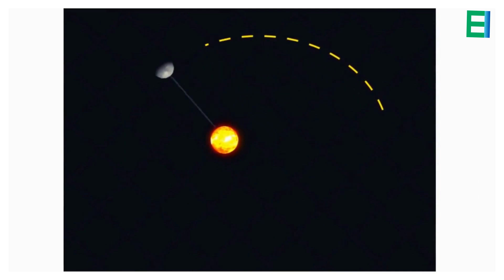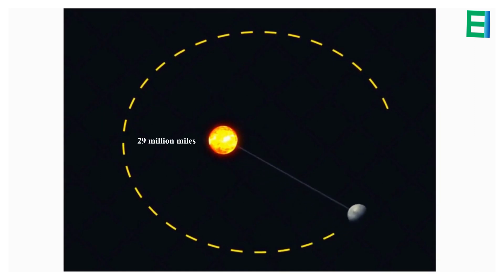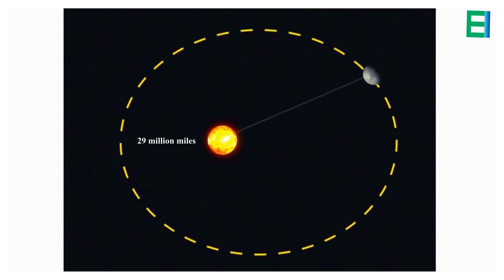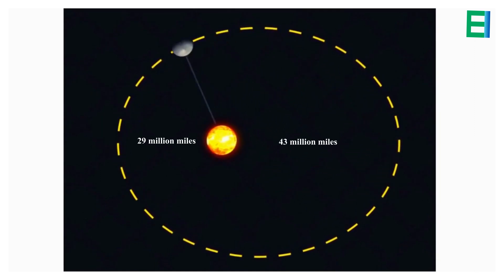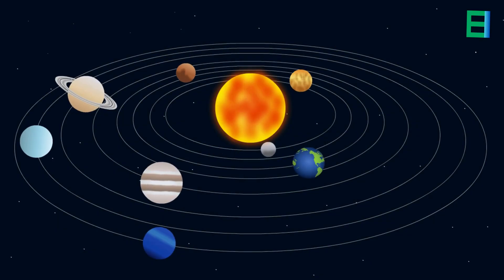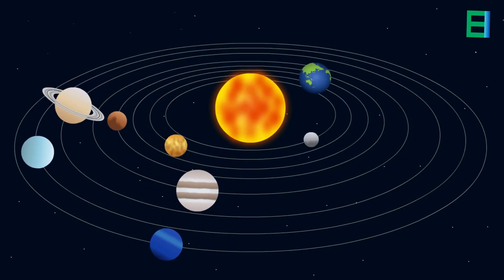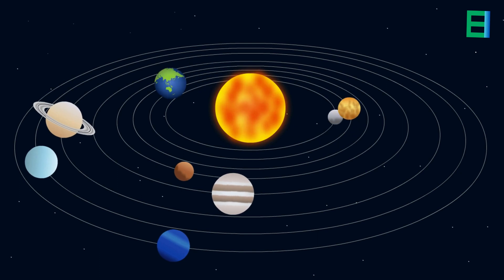Mercury, with its highly eccentric and egg-shaped orbit, journeys as close as 29 million miles and as far as 43 million miles from the sun. It completes a full orbit around the sun every 88 Earth days, making it the equivalent of one Mercury year.